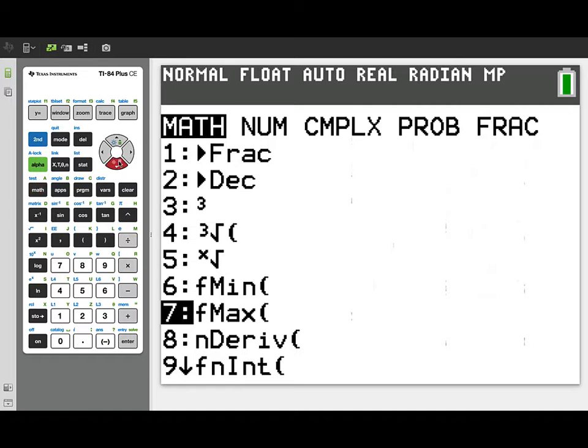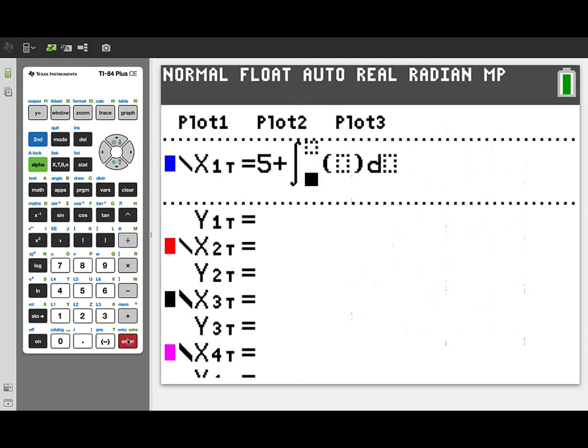And then we'll add on the integral representing the change in position over time. That's going to be the integral from 0 to t. And we'll need to integrate the velocity function for particle P here.